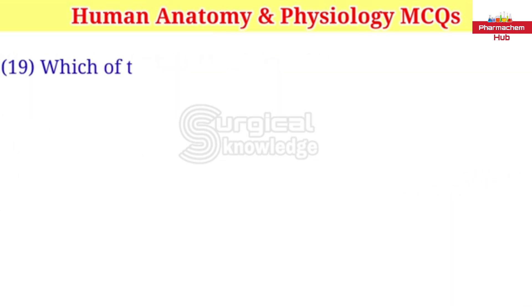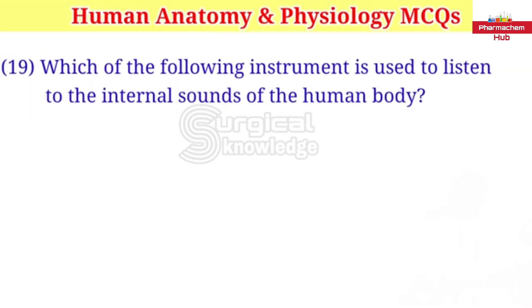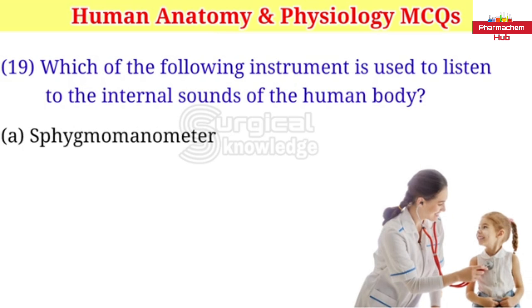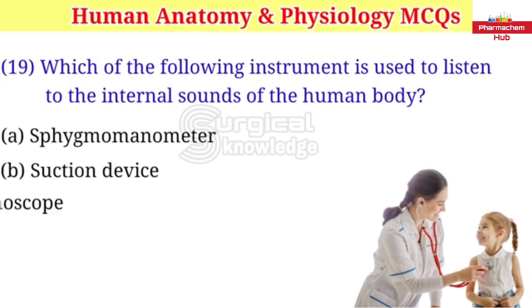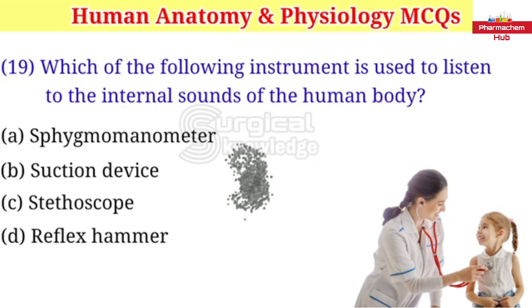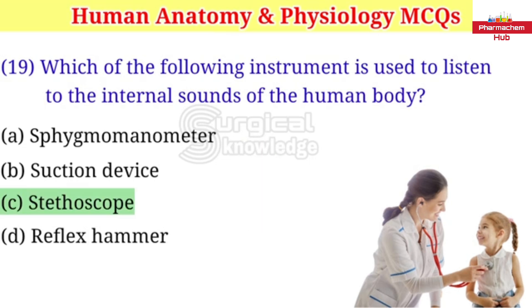Which of the following instruments is used to listen to the internal sounds of the human body? A. Sphygmomanometer B. Suction device C. Stethoscope D. Reflex hammer. Right answer is stethoscope.